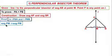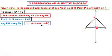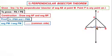Segment PM is congruent to segment PM — this is the common side between the two triangles: triangle PMA and triangle PMB.